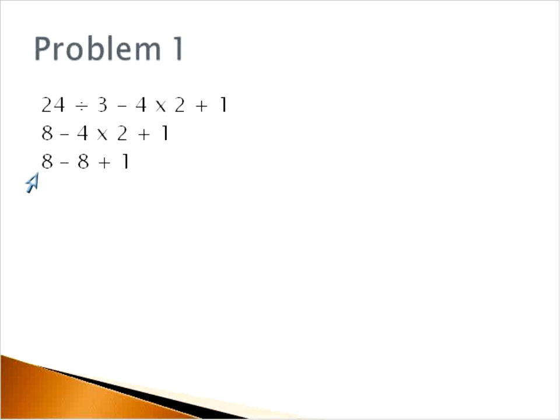Now we move, again, left to right, we've got subtraction and addition left. Addition and subtraction get done in one step. Start at the left, move to the right. The first thing we come to is subtraction. So that's actually what we would do first. 8 minus 8 is 0. 0 plus 1 is 1.